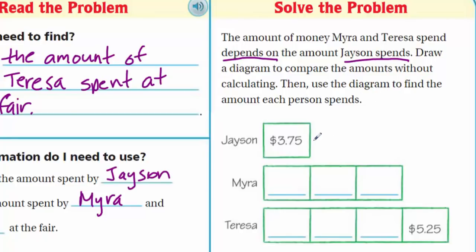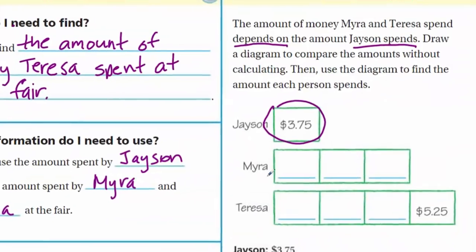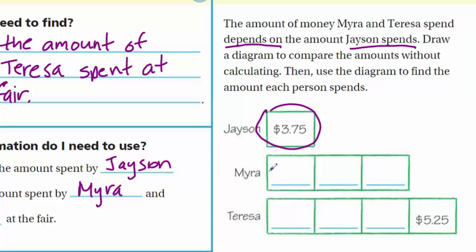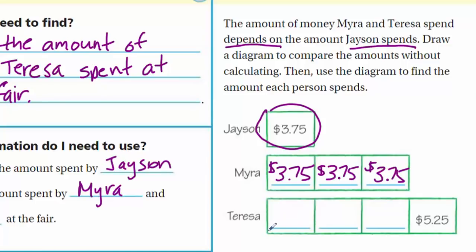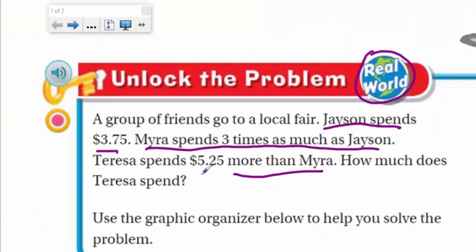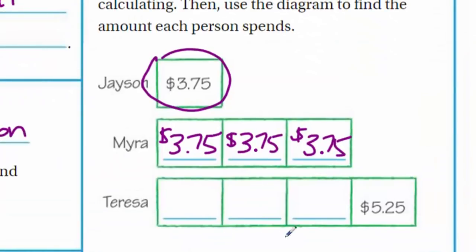Draw a diagram to compare the amounts without calculating, then use the diagram to find the amount each person spends. The diagram is set up for us. The amount Jason spent is listed right here — I'll draw a circle around it. Myra spent three times as much as Jason, which is why there are three boxes. If Myra spent the same amount it would just be $3.75, but she spent three times as much, so we show Jason's amount three times.